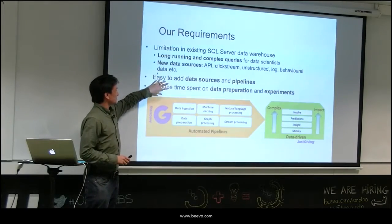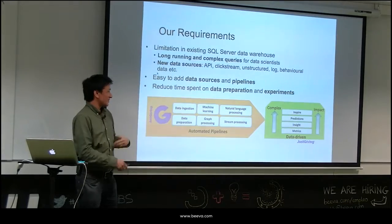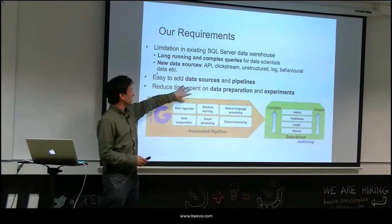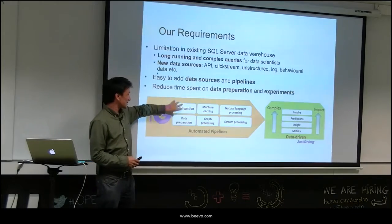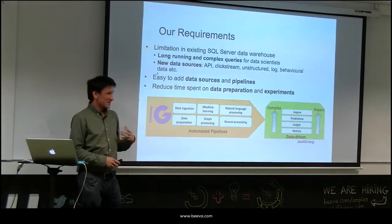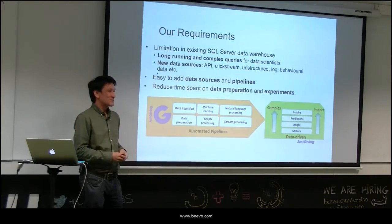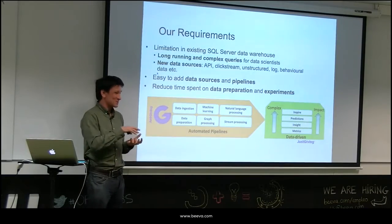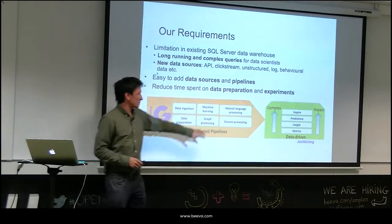I started as a data scientist at JustGiving and found I spent a lot of time preparing data — data needs to be transformed for machine learning algorithms to run. So we wanted an easy way to do this. At a high level: we've got a data ingestion process, then we prepare the data in the right shape for machine learning, graph algorithms, and NLP algorithms. For example, we can take in charity descriptions and understand in graph terms what the charity does — UNICEF could be automatically decomposed into helping children in need internationally and in specific regions around the world.